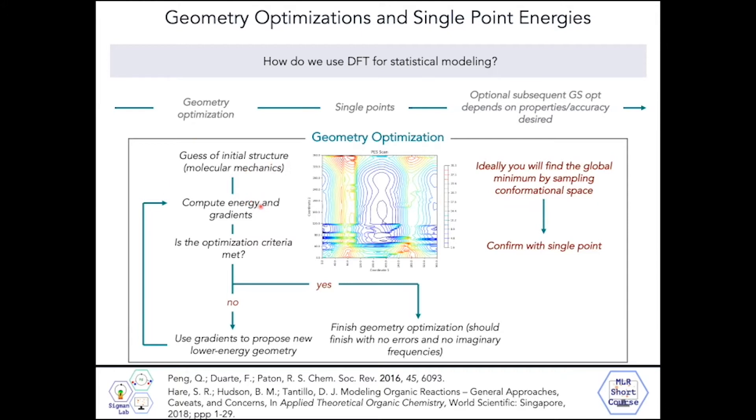The program, which we use Gaussian, would compute the energy and gradients using that basis set and functional as its starting point. It identifies whether that optimization criteria is met. If it is not met, the program uses gradients to propose a new lower energy geometry, and then energy and gradients are computed for that geometry.